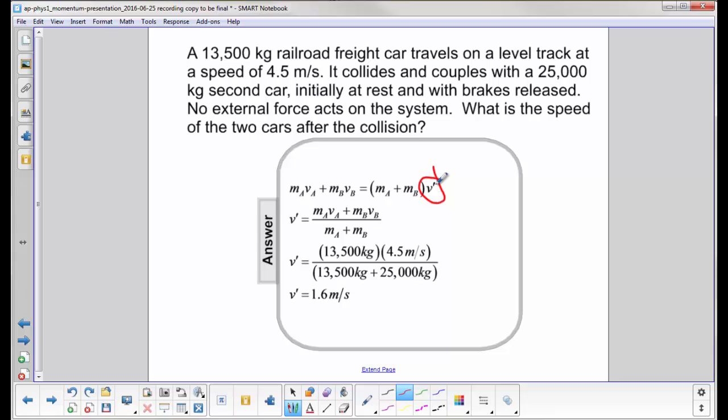That's what we're solving for, so we will isolate the variable, divide through by mA plus mB, and here's our equation. Then it's simply a matter of plugging in the givens, and here's your two masses on the bottom, and you come up with the final velocity of the combined system of 1.6 meters per second.